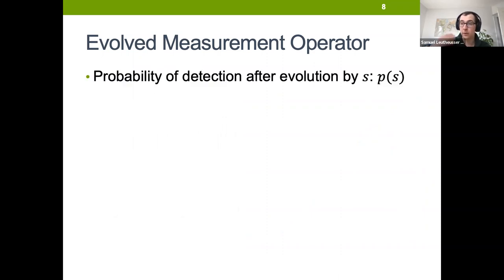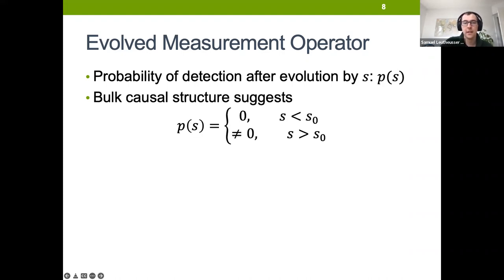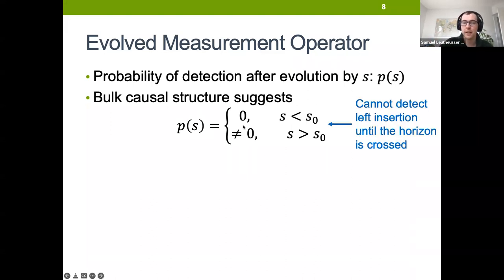Our observer is on the right side and we need to evolve them into the black hole. At some point, the description of that observer will have support on both left and right CFT degrees of freedom. Let's denote the probability that the observer detects the left insertion by P(S). The bulk causal structure gives a very clean signature: P(S) needs to be exactly zero for small enough values of the parameter, because the observer hasn't yet crossed the horizon, but after crossing the horizon P(S) should become nonzero. This is the mathematical statement that the observer can't detect the left insertion until they've crossed the horizon.